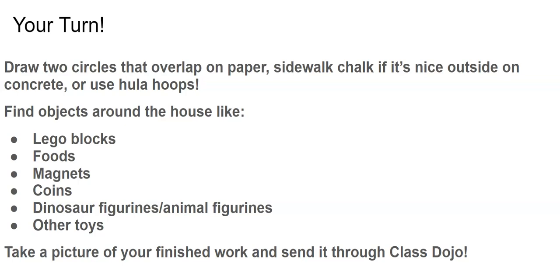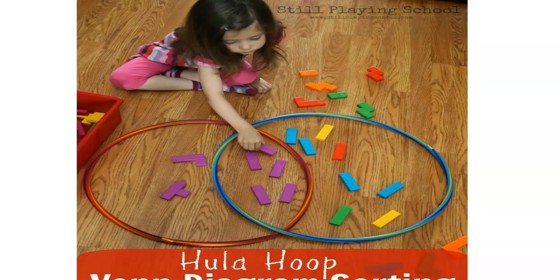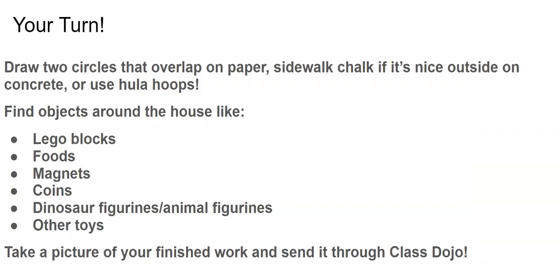So now it's your turn. You can either draw two circles that overlap on paper — maybe an adult can help you — or use sidewalk chalk outside if it's nice, to do this on the concrete. Or you can use hula hoops like the little girl did in the picture. Then you find objects around your house, like Lego blocks, food, magnets, coins, or even dinosaur and animal figurines or other toys, and compare them. You put what's different on the outside, and what's the same in the middle. You can take a picture of your finished work and send it through Class Dojo to your teacher if you'd like. Thank you, and have fun sorting shapes and objects.